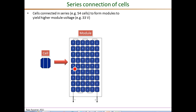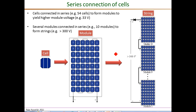From a single cell, 54 or 72 cells connected in series — all in several rows — yield a higher voltage. A PV module or PV panel is the basic unit of a PV system. Then several of these modules are connected in series themselves to form what are known as PV strings.